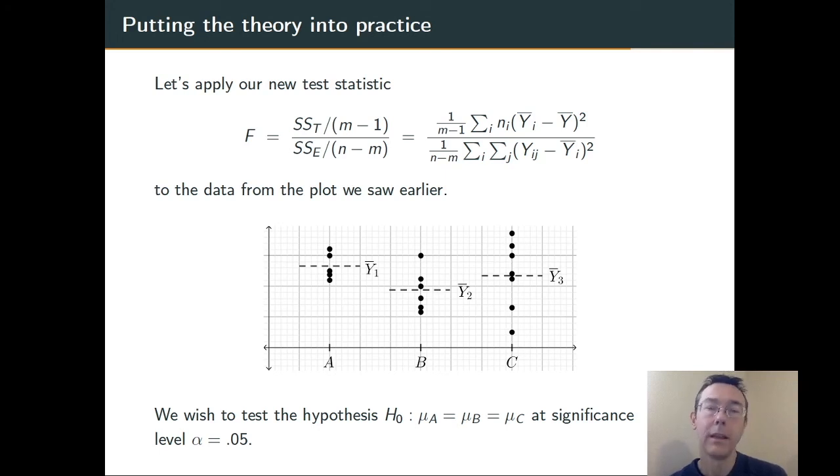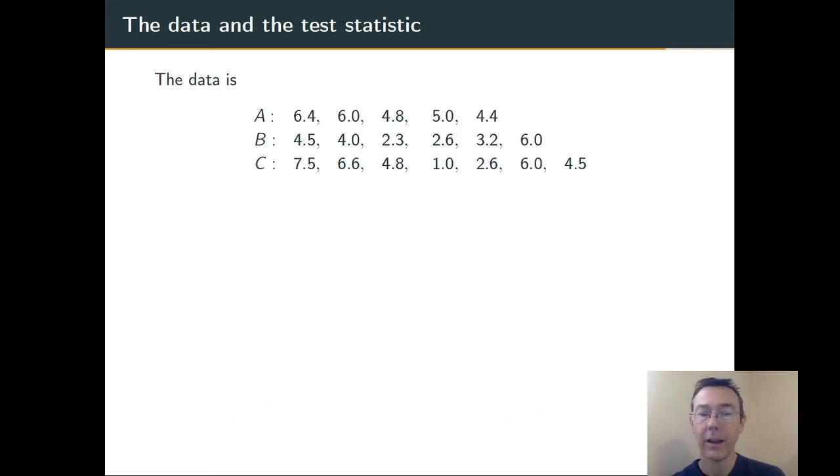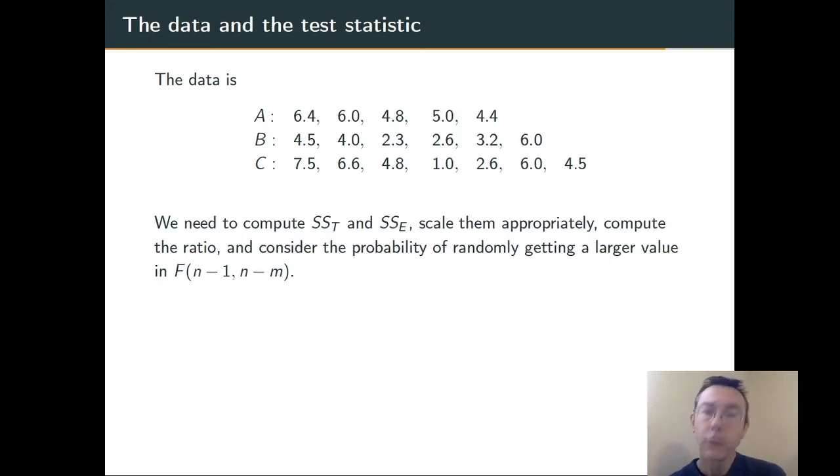Enough of that. Let's actually apply this new F statistic that we have here. Here are the formulas. I want to use the data from this graph that I posted earlier, when we were going through just the basic ideas of this. The null hypothesis is going to be that the population means are the same for each group. We'll use significance level alpha equals 0.05. Here's the data. We need to compute the treatment sum of squares and the error sum of squares, scale them appropriately, take the ratio, and then consider the probability of randomly getting an F statistic greater than that in the F distribution with m minus 1 and n minus m degrees of freedom. I don't want to spend a lot of time actually plugging into those formulas. In practice, we do that using technology, and actually doing it out by hand would just be painful to watch.